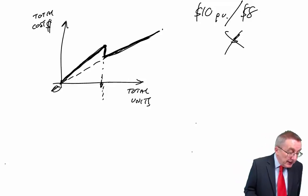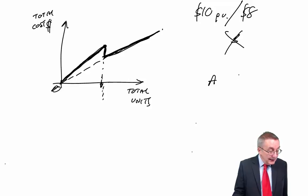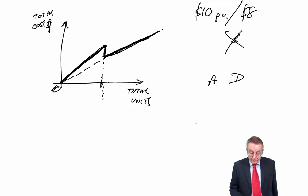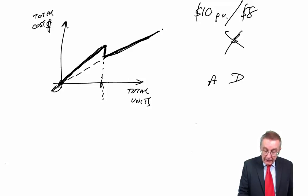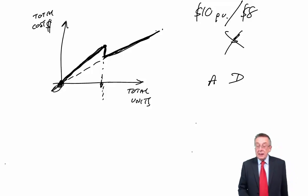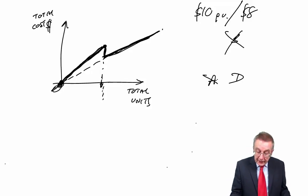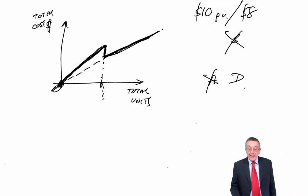Is it A or D, which both look very similar? Had the price always been ten dollars, you start at zero and go up. Had it always been eight dollars, you'd also start at zero and go up. So both lines must go through zero. A definitely doesn't go through zero. D looks as though it does. The answer is D.